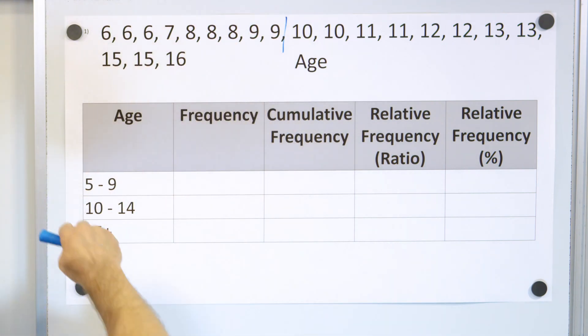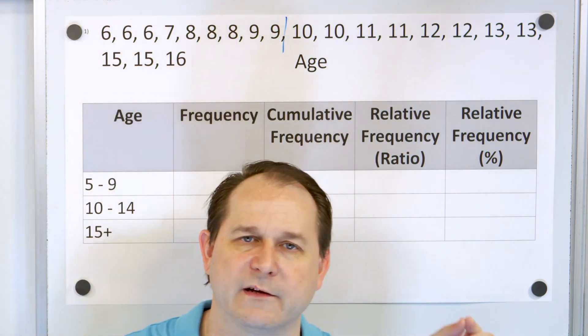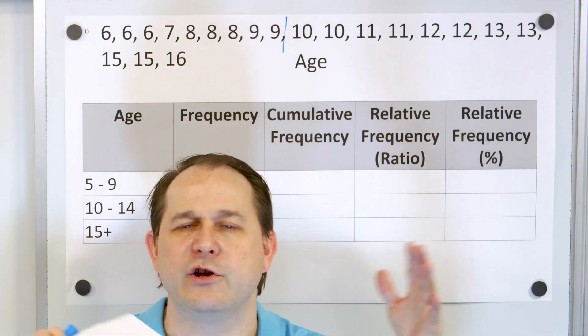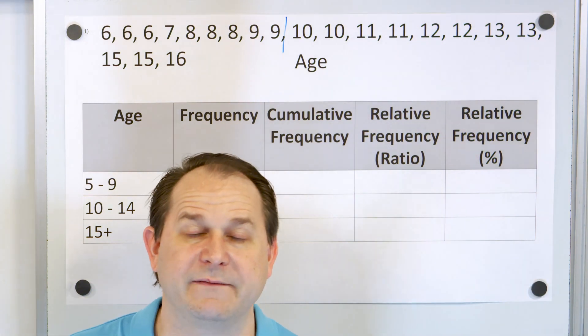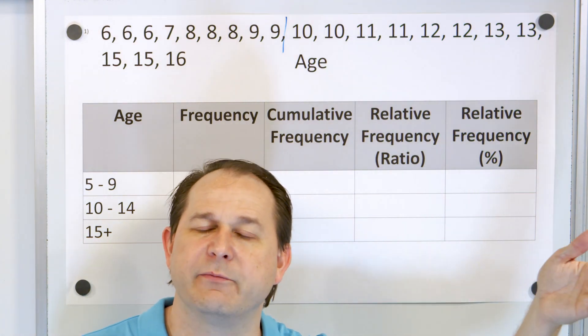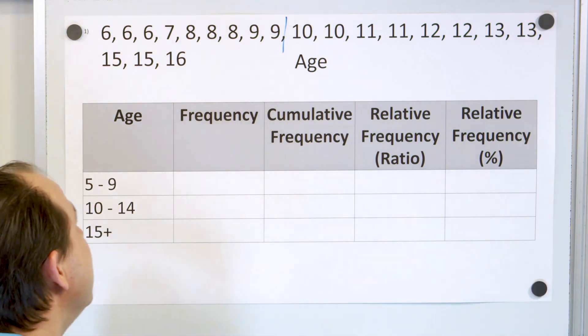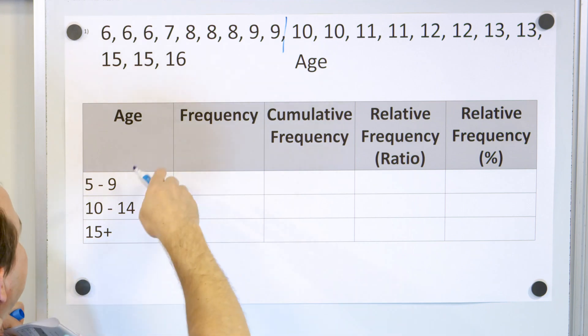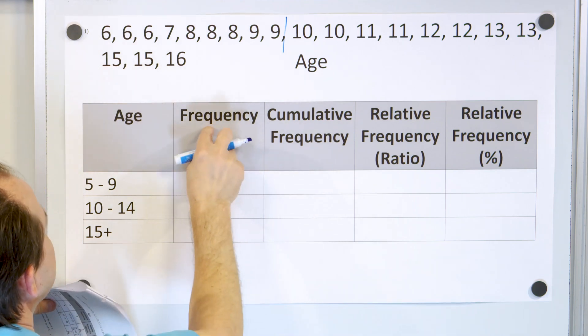Now notice this was easy because I've already ordered the data from smallest to largest. A lot of times you collect the data, it's all randomly in no order. So the first step often is to go ahead and order the data from smallest to largest. It's often very helpful. So there's 9 different people that fall into this age bucket here. So under the frequency goes 9.